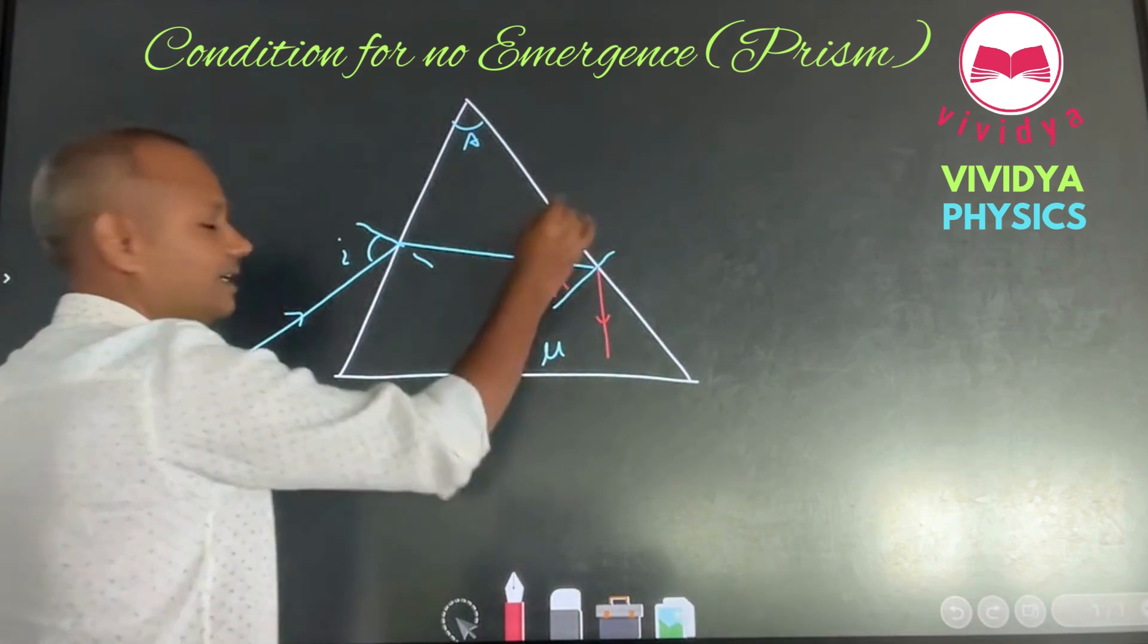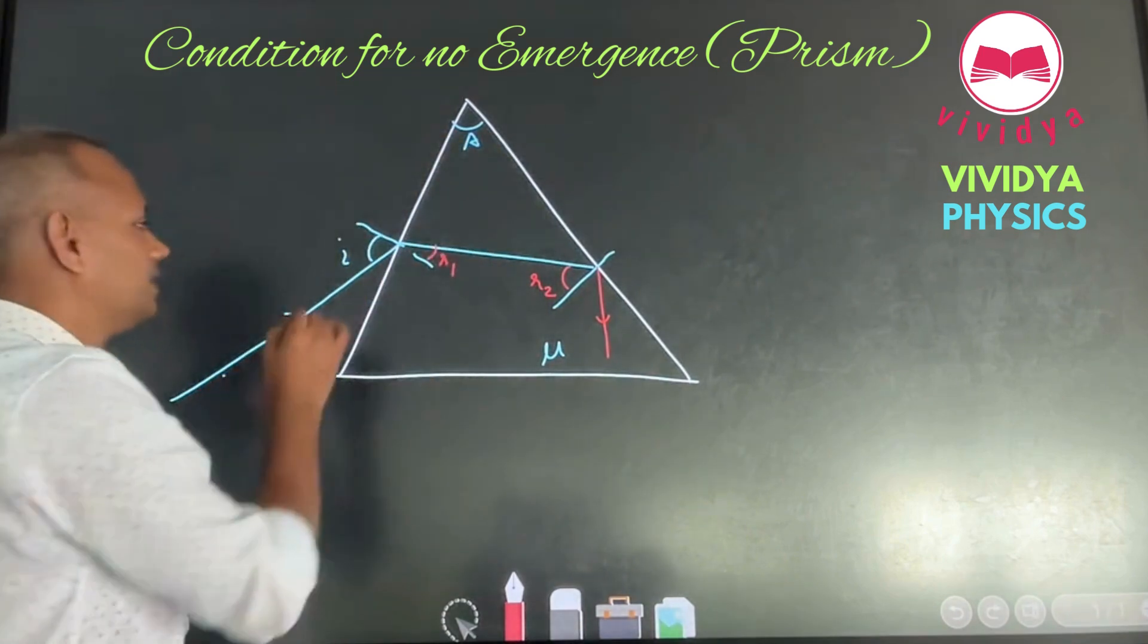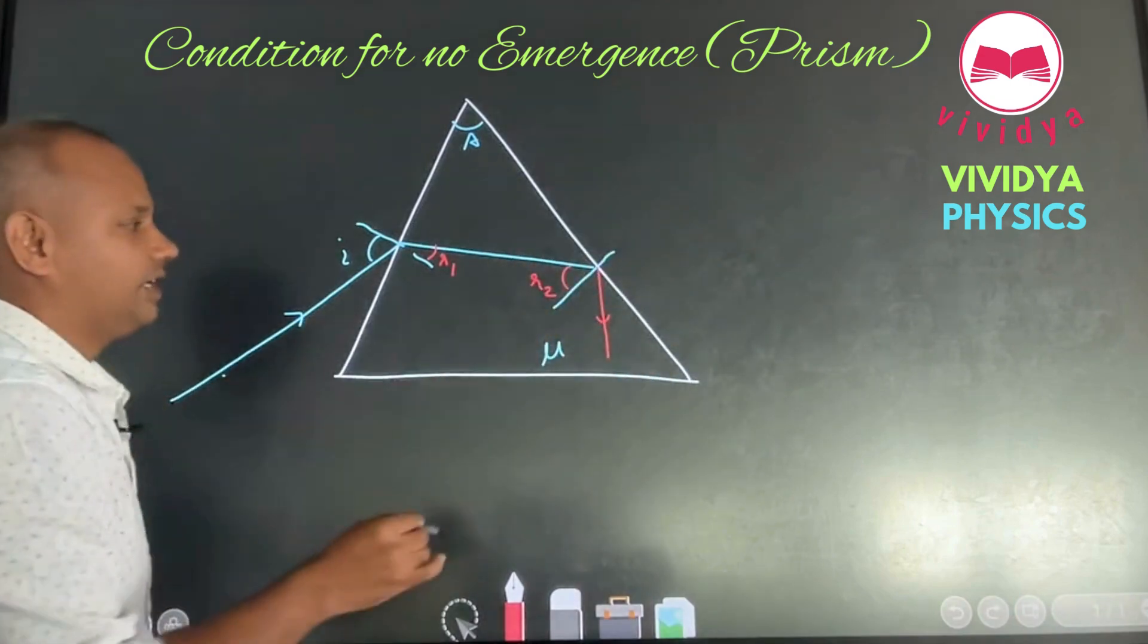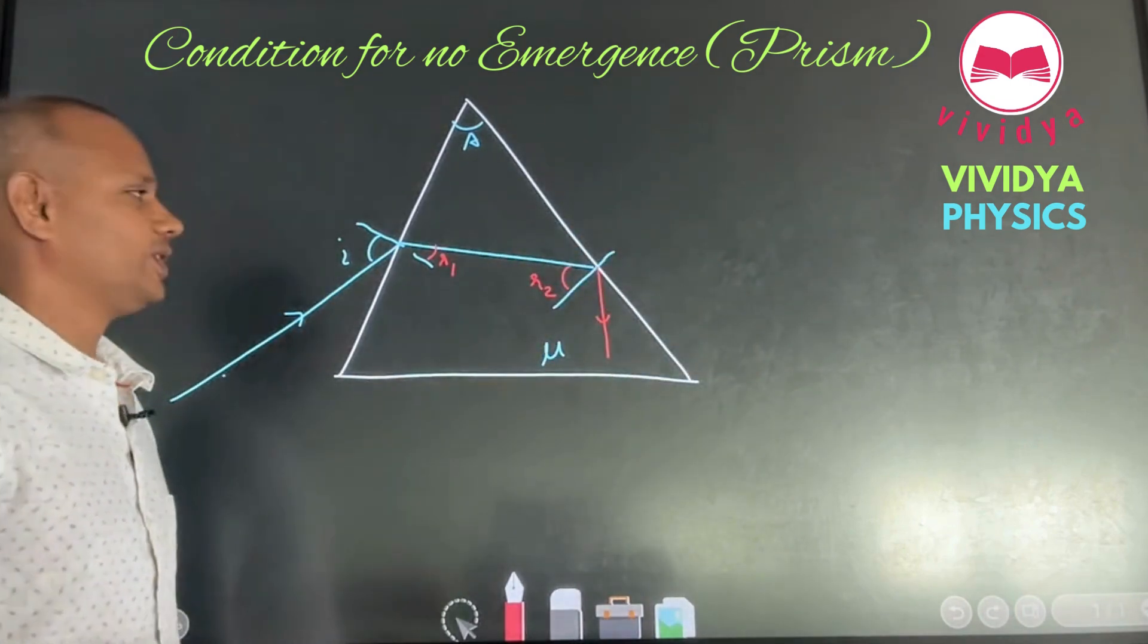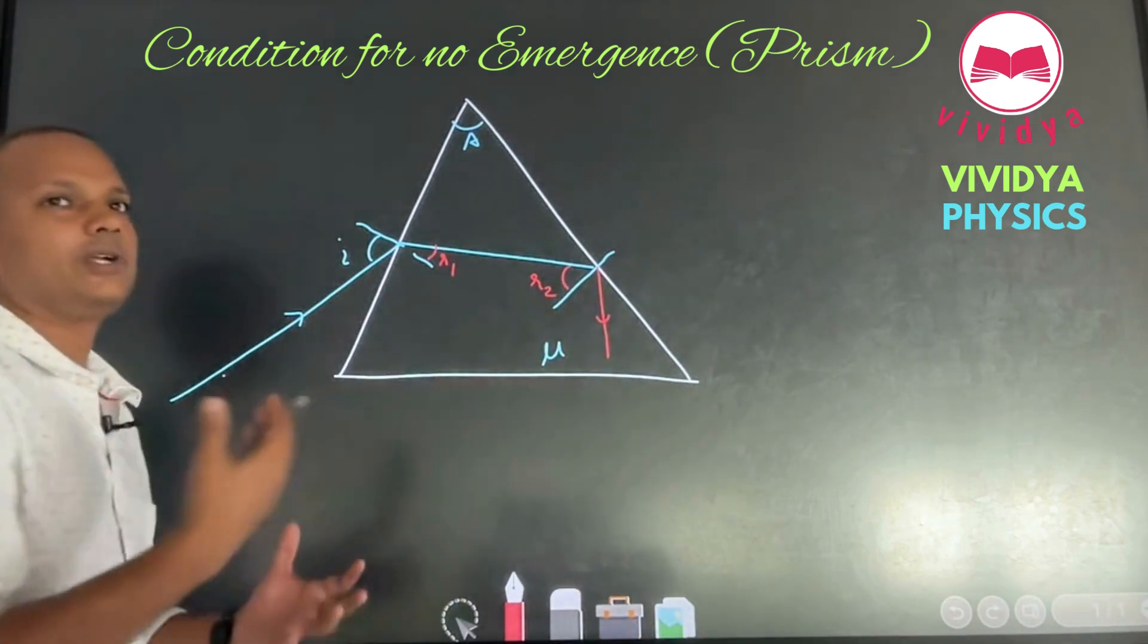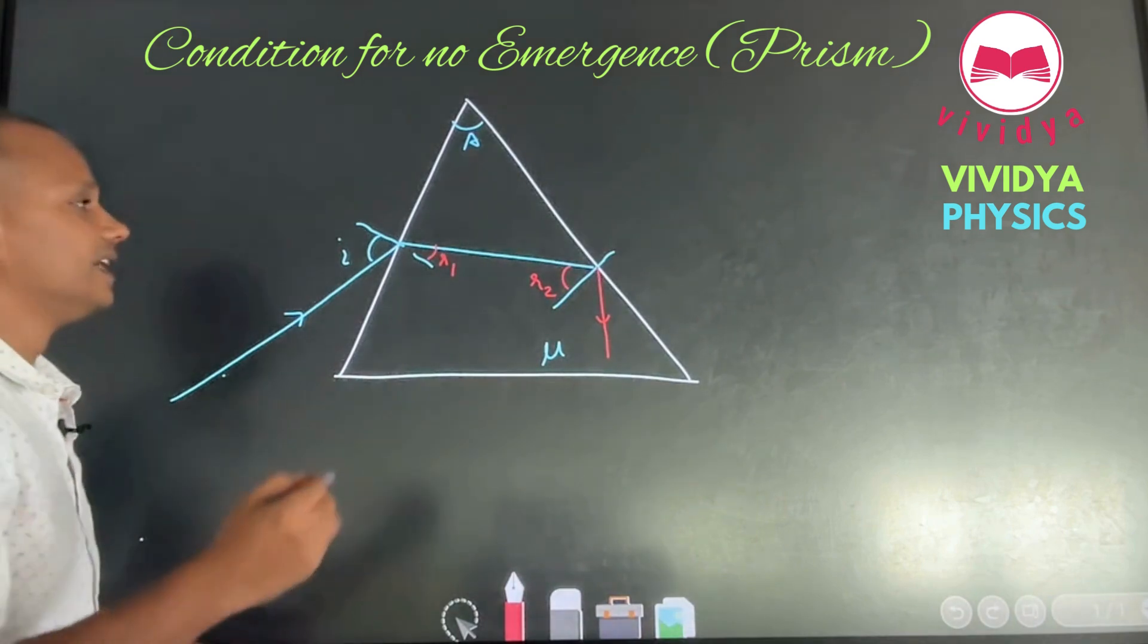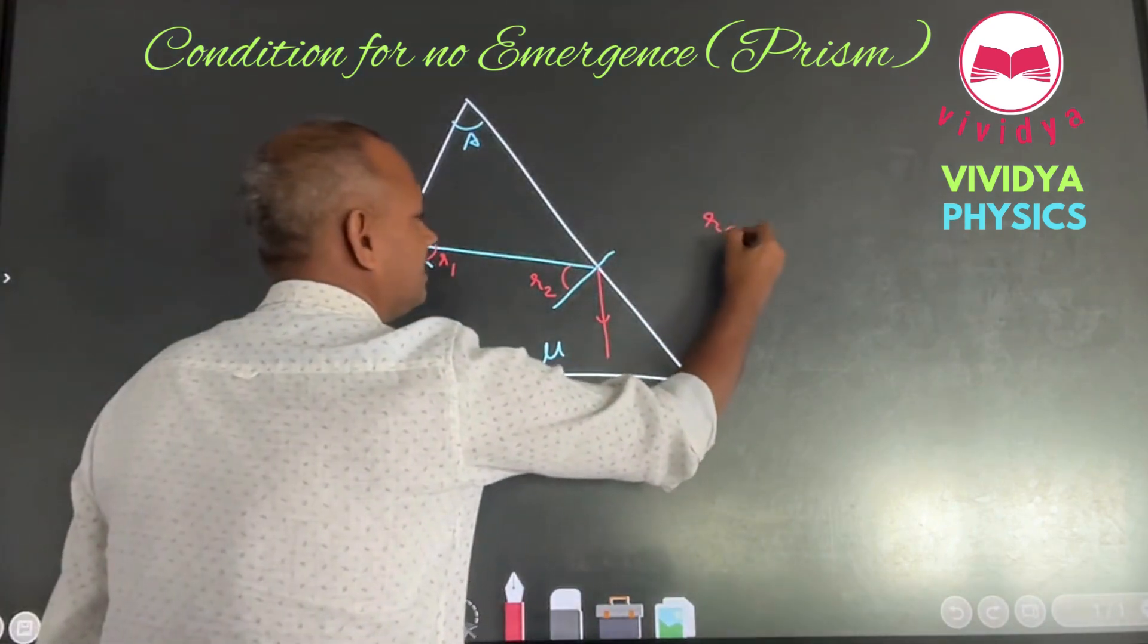Can we block what is it? This R2. You remember the standard notation. This is R2, this is R1, this is angle of prism, this is i and if there was emergence, we could have written angle of emergence. What will be the value of R2? What you can comment about R2? Correct. R2 should be greater than critical angle.